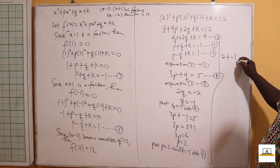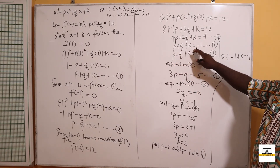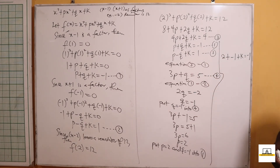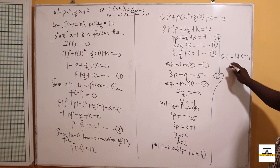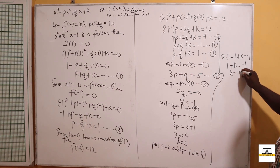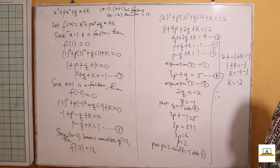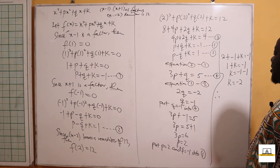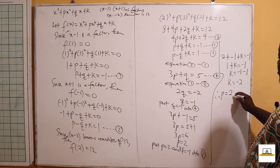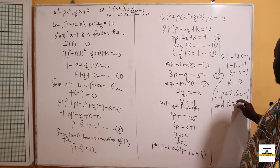With p = 2 and q = -1, we substitute into Equation 1 to find k. From p + q + k = -1: 2 + (-1) + k = -1, so 1 + k = -1, giving k = -2. Therefore, p = 2, q = -1, and k = -2.